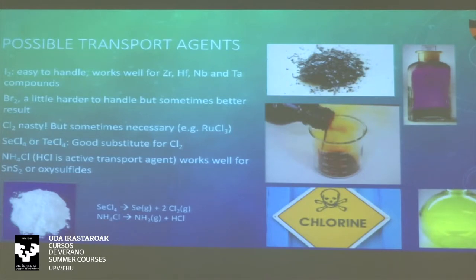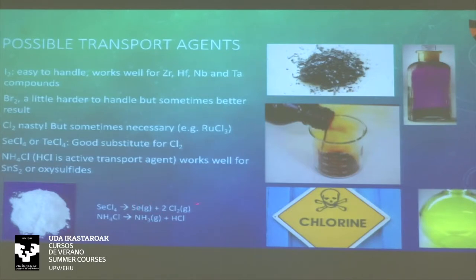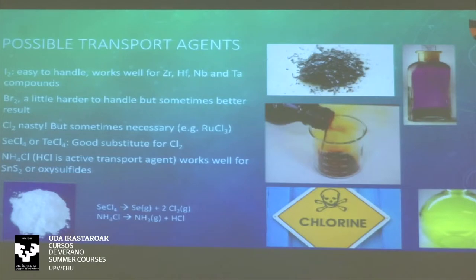You can find a way around using chlorine gas directly by using things like selenium tetrachloride, which is a powder that decomposes to gaseous selenium and chlorine when heated, or ammonium chloride, which decomposes to ammonia and HCl gas — so you can use HCl gas as a transport agent. These different transport agents work for different kinds of materials. Some famous ones grown this way include things like chromium chloride, which is also a 2D magnetic material. You collect crystals at the end of your tube, and if you're not happy with the result, you can take a small crystal as a seed and use it to grow even larger crystals around it.